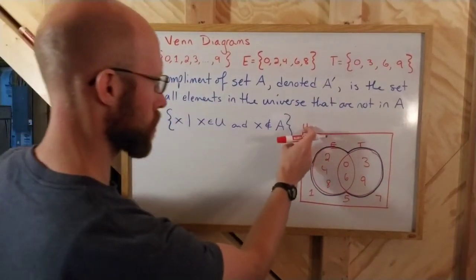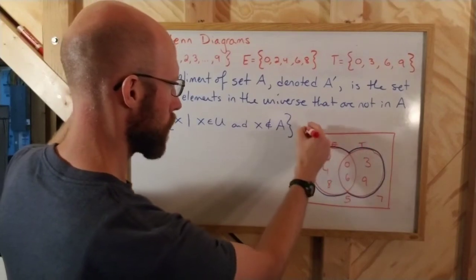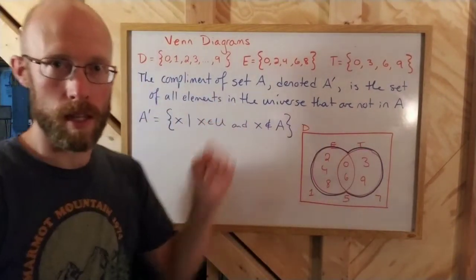I should actually have D here, not U. I mean, it is the universe, but we're using set D there.